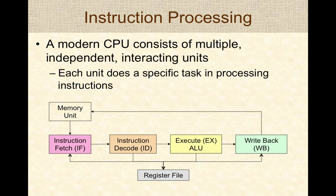In modern CPUs, instruction processing is typically broken up into smaller steps, and independent hardware units are used to perform each step. Typically, there are four key steps in instruction processing: instruction fetch, decode, execute, and write-back. The CPU processes instructions in this cycle.